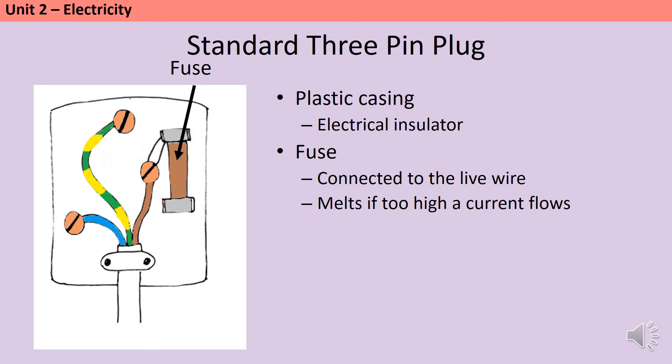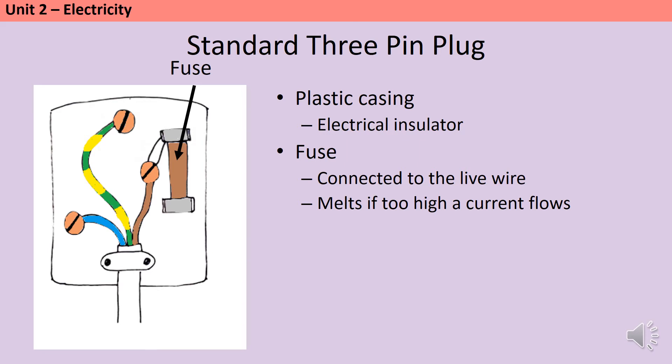The cable coming into the plug is what we call a 3-core cable, and it's made up of 3 individual wires with different functions. The wiring inside these cables is made of copper, because copper is a very good electrical conductor, and it's also very flexible and very ductile, so it's good for making wires. The different plastic casings on the wires make it very easy for an electrician to know which wire is which.